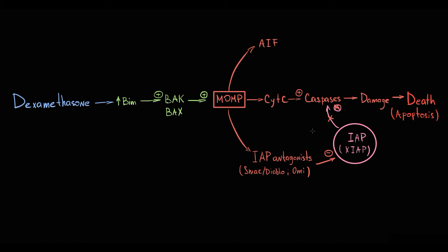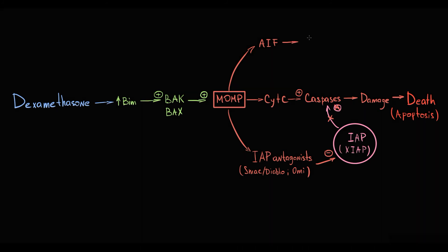The third substance released into the cytosol is apoptosis-inducing factor. This molecule gives a signal to the nucleus that the cell is dying, and in response to this, the nucleus induces condensation of chromatin and fragmentation of the DNA molecule. Basically, this molecule prepares the lymphocyte for death.